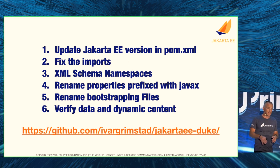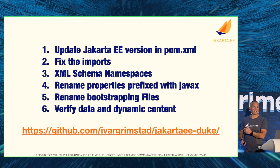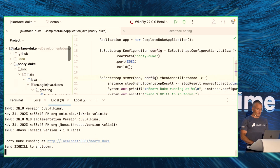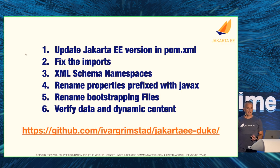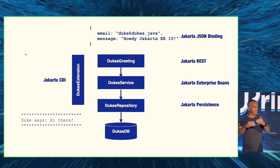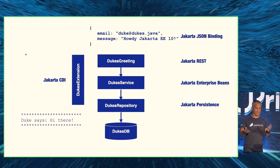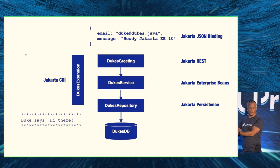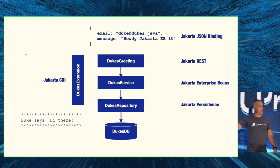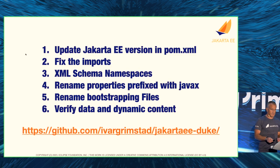You can also do it manually — it's not that hard. I'll show manual steps using the Jakarta EE Duke application. The steps involved are: update the POM, fix imports, update XML namespaces, update property files, rename bootstrapping files, and check dynamic content. Let me walk through the application first: it's a Hello World app that produces a greeting in JSON via a REST API using Jakarta REST and Jakarta JSON Binding, with Jakarta Enterprise Beans for business logic and Jakarta Persistence to retrieve a message from the database.